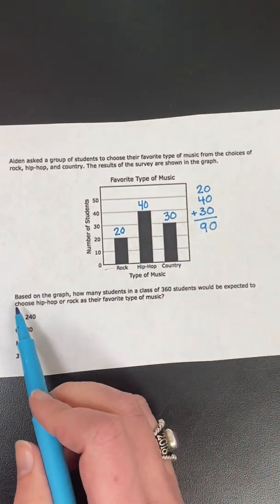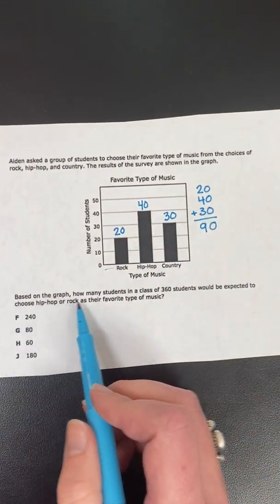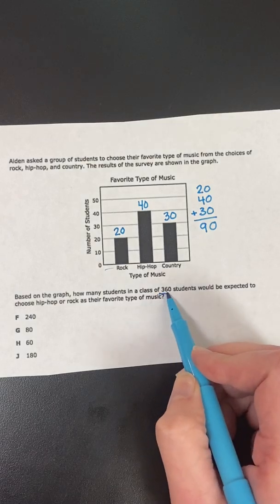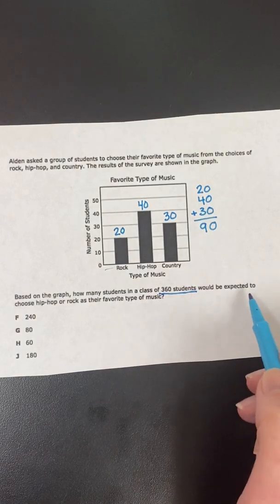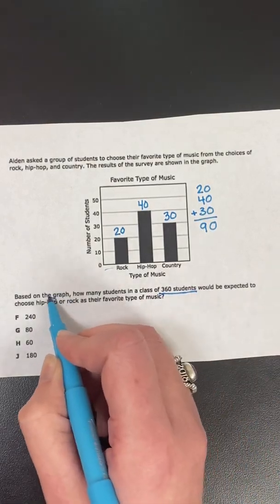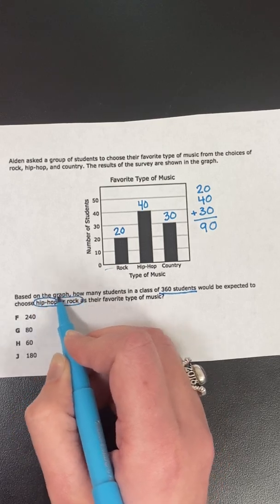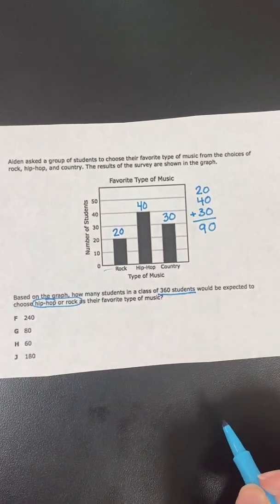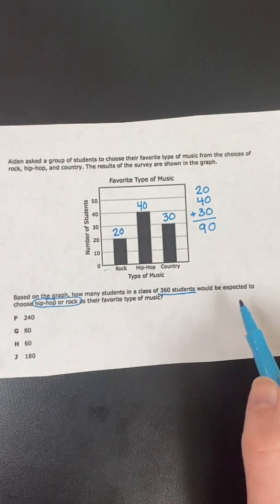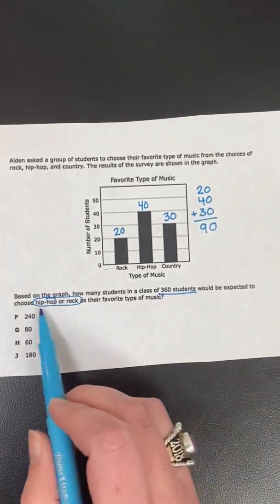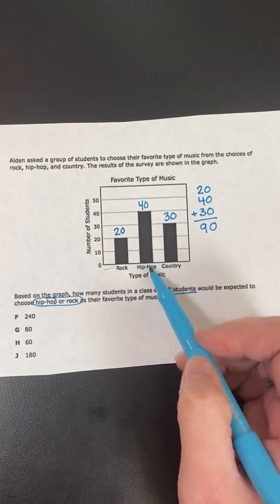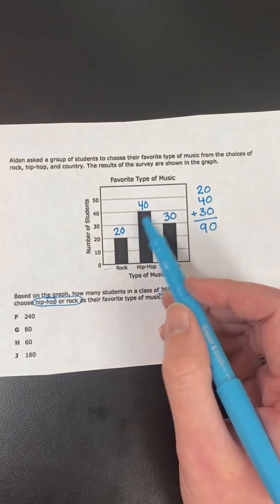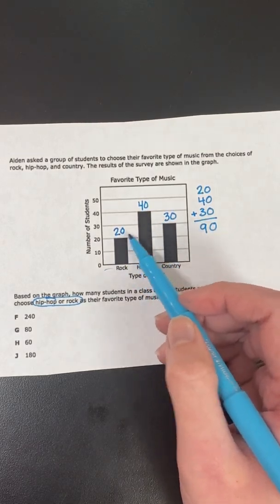So again, the question says, based on the graph, how many students in a class of 360 would be expected to choose hip-hop or rock as their favorite type of music? So first of all, I need to know how many people like hip-hop or rock. So hip-hop or rock, 40 and 20, that would be 60.